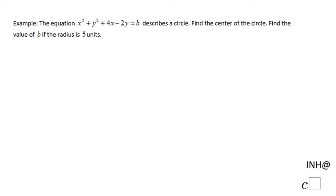Welcome back! I'm here to help at C Square. In this example, we have to find the center of the circle. The equation is given right here, and we need to find B if the radius is 5 units. The first step is to rearrange this equation axis by axis.